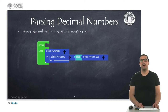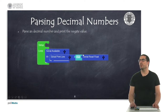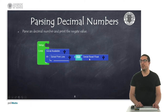In this other example, what we're going to do is to parse decimal numbers — they correspond to float numbers. So whenever we introduce a floating number in the console, we will perform the negation, and this is the number we will return.